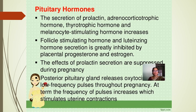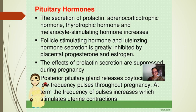Pituitary hormones: secretion of prolactin, adrenocorticotrophic hormone, thyrotrophic hormone, and melanocyte-stimulating hormone increases, which accounts for some skin changes. Follicle-stimulating hormone and luteinizing hormone secretion are greatly inhibited by placental progesterone and estrogen. The effects of prolactin secretion are suppressed during pregnancy. The posterior pituitary releases oxytocin in low-frequency pulses throughout pregnancy; at term the frequency of pulses increases, stimulating uterine contractions.